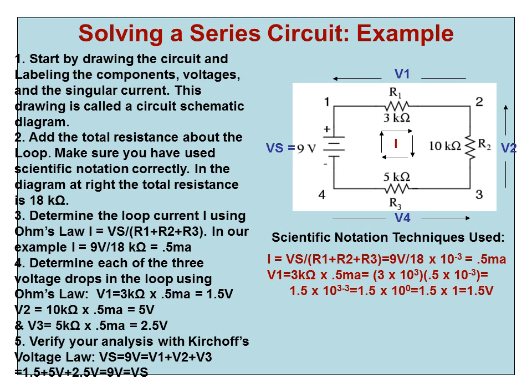Determine each of the three voltage drops in the loop using Ohm's law. V1 is going to be equal to 3 kilo ohms times 0.5 milliamps. That's 1.5 volts.